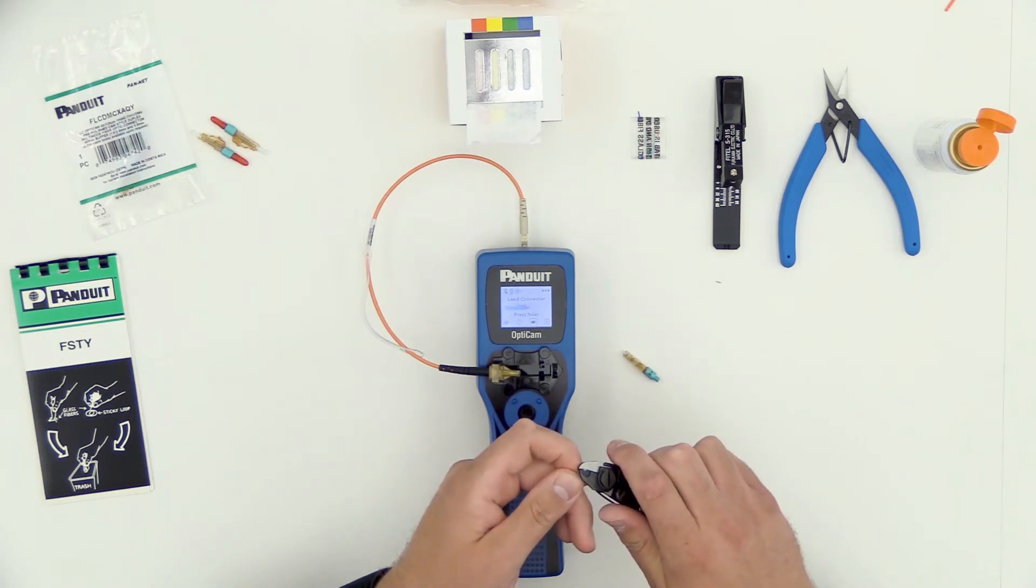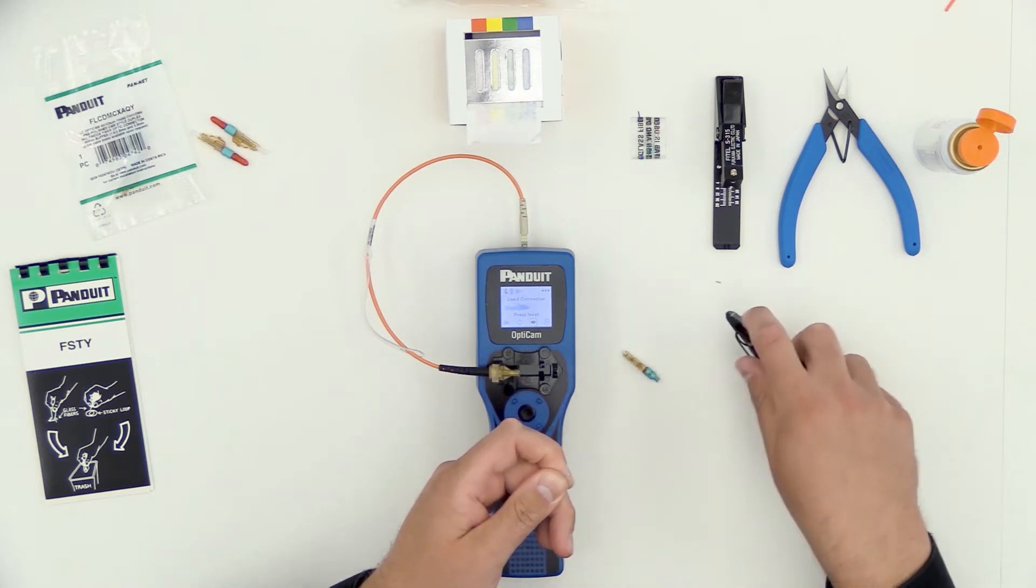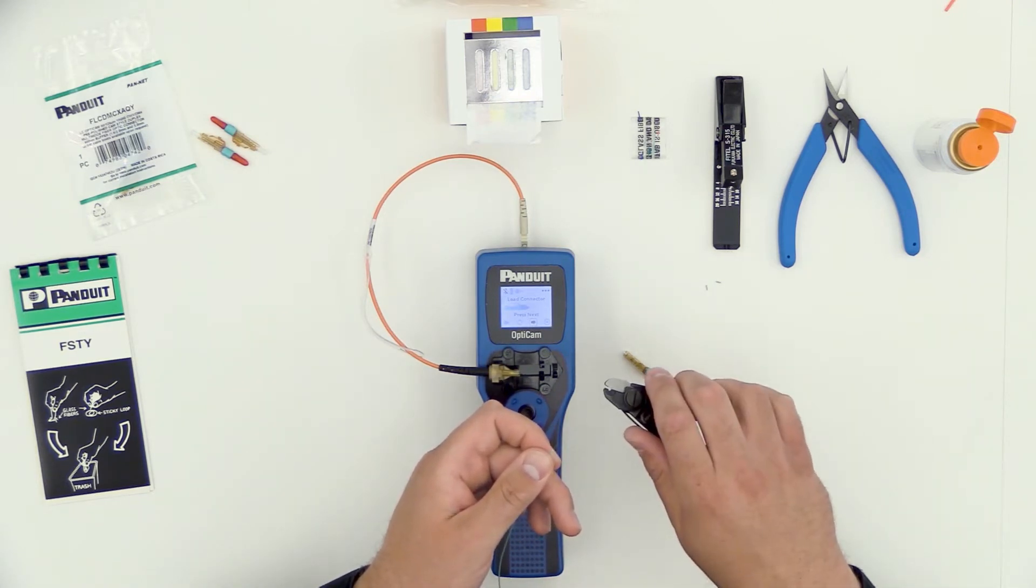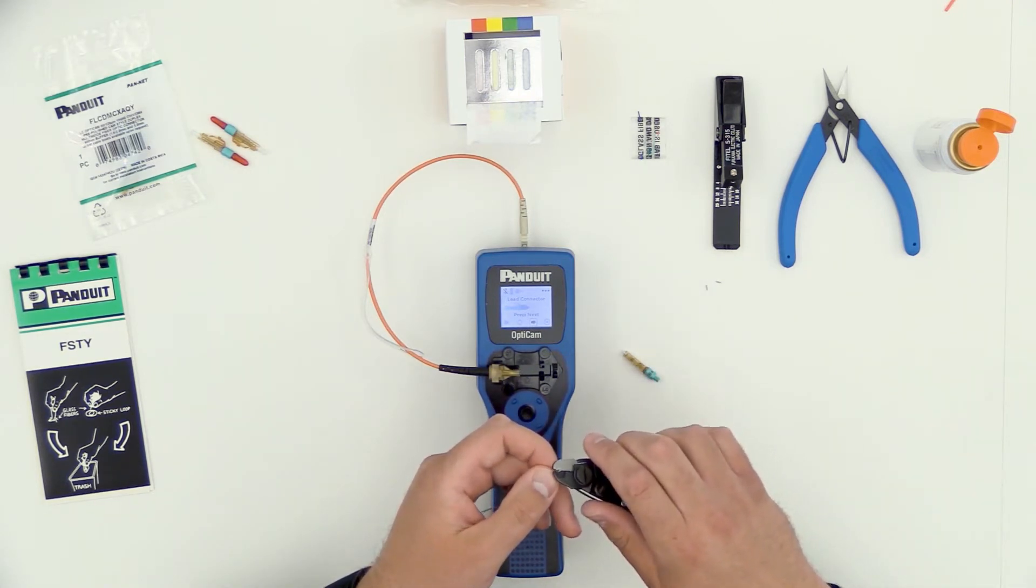Depending on how steady your hands, you may have to, like I'm doing, turn the stripper at a slight angle to make sure you don't break the fiber.